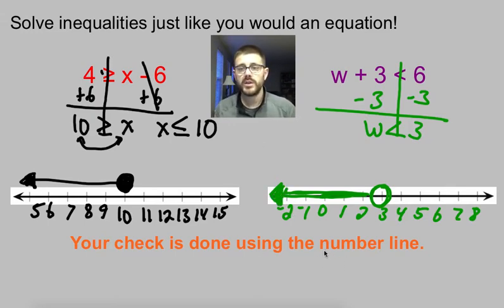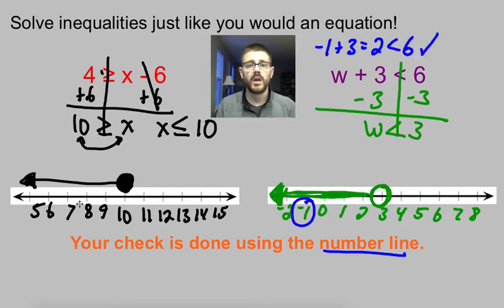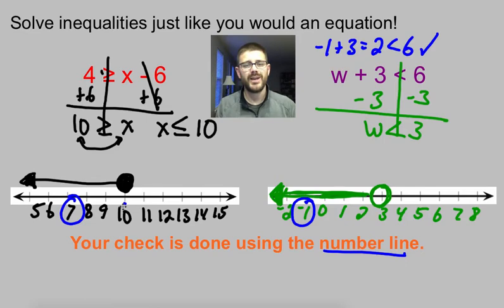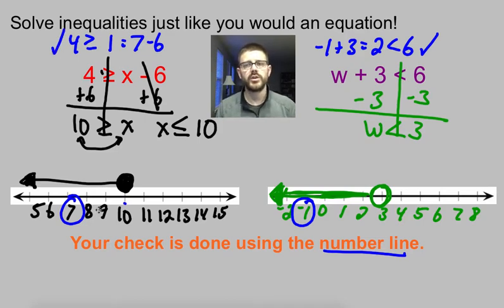To do your check, just use your number line — pick any number along your shaded region. For example, negative 1: negative 1 plus 3 is 2. Is 2 less than 6? Sure, that works. For the first example, pick a 7 — it doesn't matter, as long as you pick any number along the side you shaded, just don't pick the number right where your circle is. Plug in 7: 7 minus 6 is 1. Is 4 greater than or equal to 1? Yes. So we know we shaded the right way. The check lets you confirm you shaded the correct side of the line.